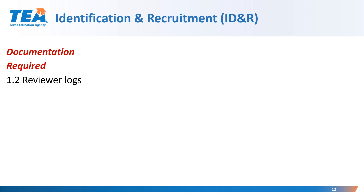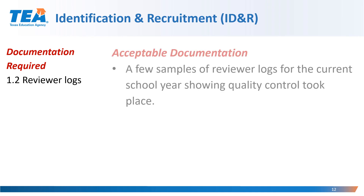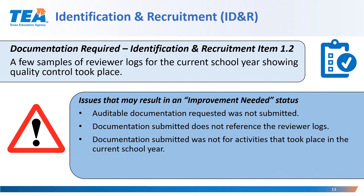Requirement 1.2 Reviewer Logs. The acceptable documentation for this requirement are a few samples of reviewer logs for the current school year showing quality control took place. Issues that may result in an improvement need status are the following: applicable documentation requested was not submitted; documentation submitted does not reference the reviewer logs; or documentation submitted was not for activities that took place in the current year.